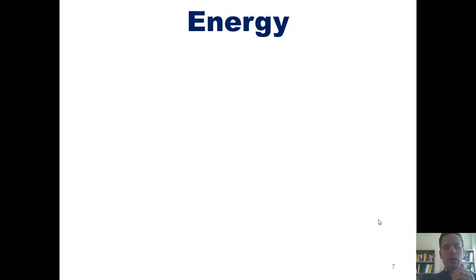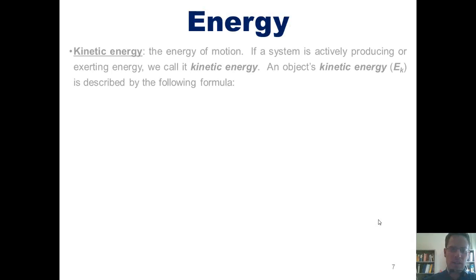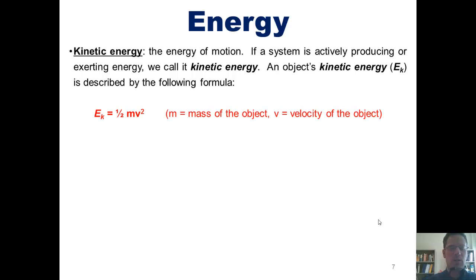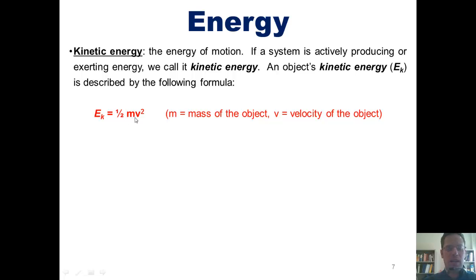We learned in our previous video that kinetic energy can be described mathematically by using this formula: E sub k, kinetic energy, equals one half times the mass of an object multiplied by its velocity squared.